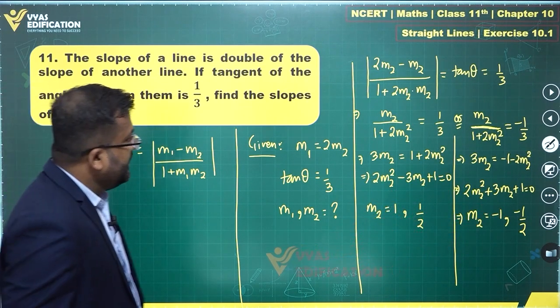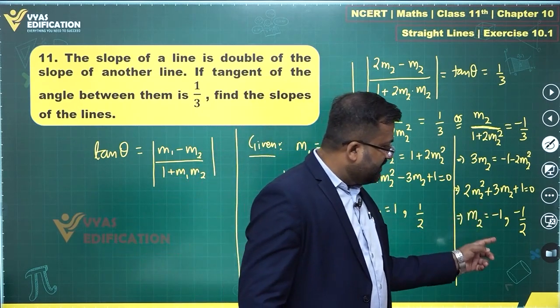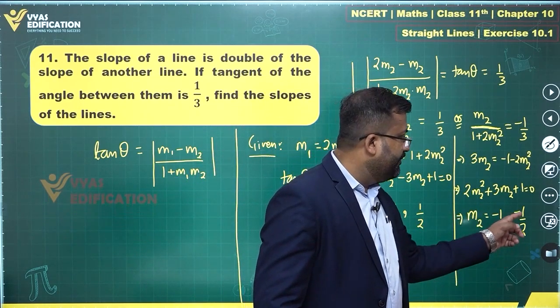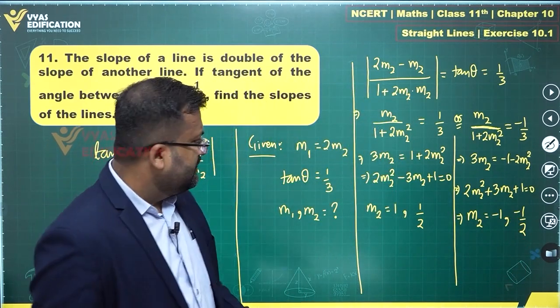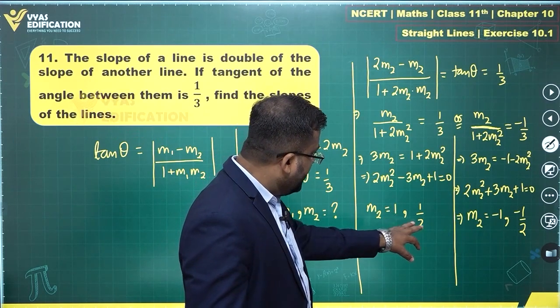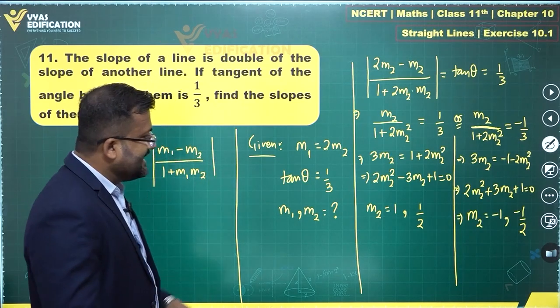If M2 is equal to these 4 possible values, then M1 correspondingly will be equal to double of this. If this is 1 this becomes 2. This is half this becomes 1. This is minus 1 this becomes double, that is minus 2. This becomes minus 1.